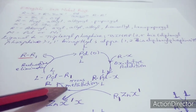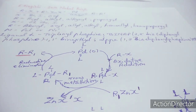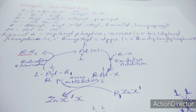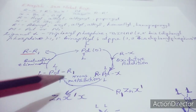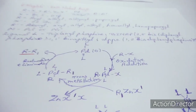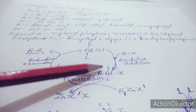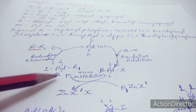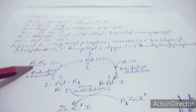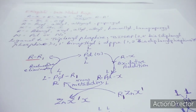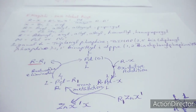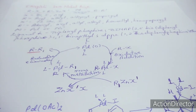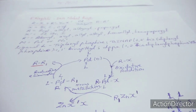In transmetalation, the organozinc exchanges its organic substrate R' with the halide on palladium, giving an R–Pd–R' complex. Initially this is formed as the trans isomer; cis-trans isomerization then converts it to the cis form. The final step is reductive elimination, which gives the cross-coupled product R–R'. These steps are analogous to those in other palladium-catalyzed cross-coupling reactions.